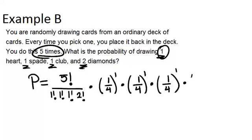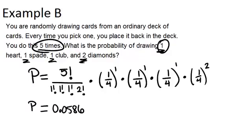And last, we have one-fourth probability of picking a diamond, but we want two of those, so we raise that to the second power. We can now use our calculator to help us calculate all of this and get an actual numerical answer. And we find out that the probability is about 0.0586, which is approximately 5.86% chance that we will get one heart, one spade, one club, and exactly two diamonds in our five trials.